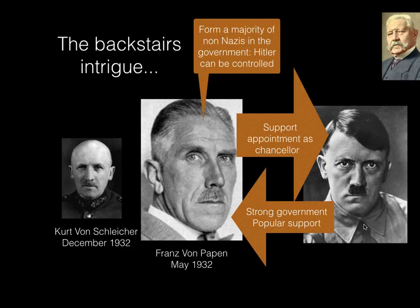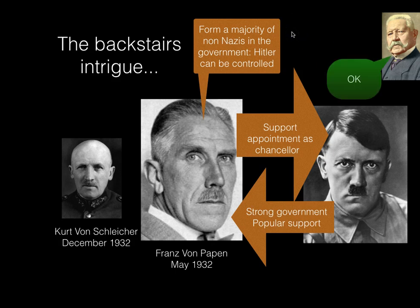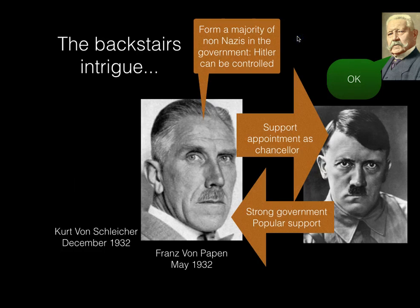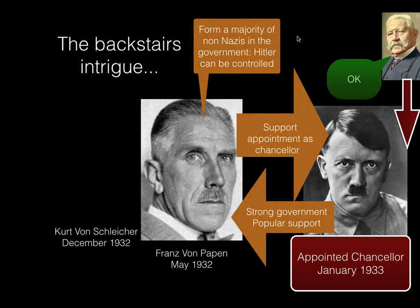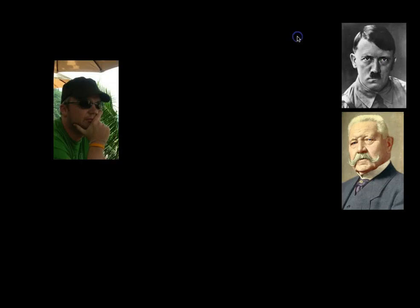Papen brings this to Hindenburg, basically saying: let's form a majority of non-Nazis in the government and get the support of the Nazis, but Hitler can be controlled. Hindenburg, after the failure of Schleicher, Papen, and Brüning, basically agrees. Schleicher is out, and Hitler is appointed chancellor in January 1933.